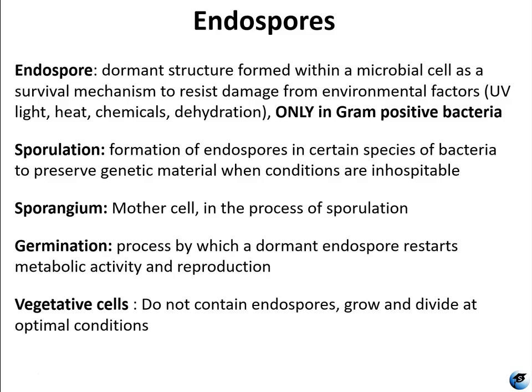Be sure to read up on the processes of sporulation and germination in the text, and be aware that you may observe multiple stages of sporulation and germination in the same slide. For example, you may see stage 0, a normal vegetative cell with no endospores, and you might see any combination of stages 1 through 6 where the cells appear as an endospore surrounded by sporangium from the mother cell. Those are the easiest kind to observe under the microscope.